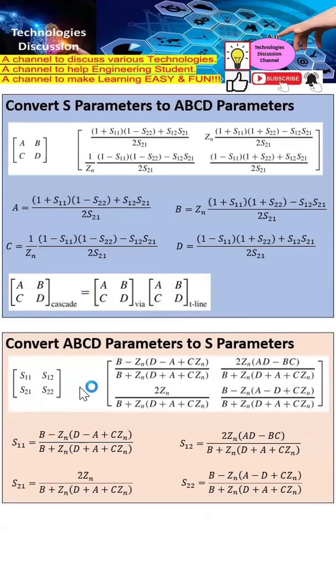Over here is the reverse process of how to convert the ABCD parameters into S parameters. As I mentioned earlier, once I convert the S parameters into ABCD parameters, I can cascade them together. After that, I will obtain the overall ABCD parameters, and then I need to convert them back to the original S parameters.